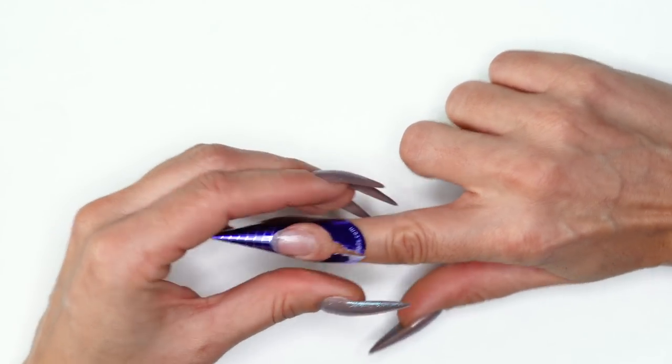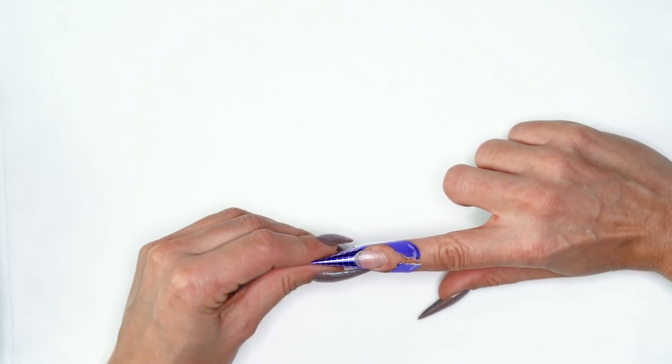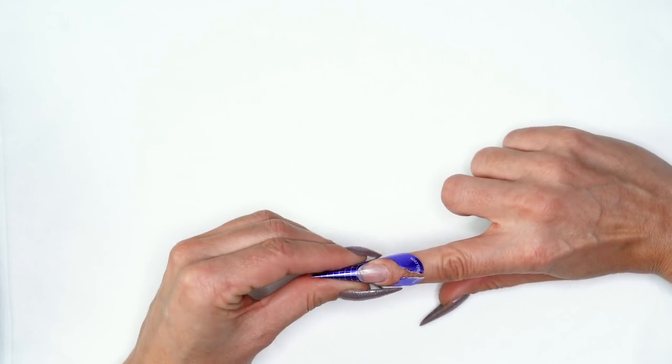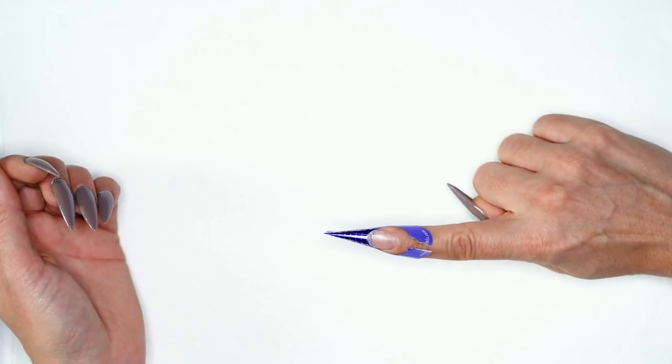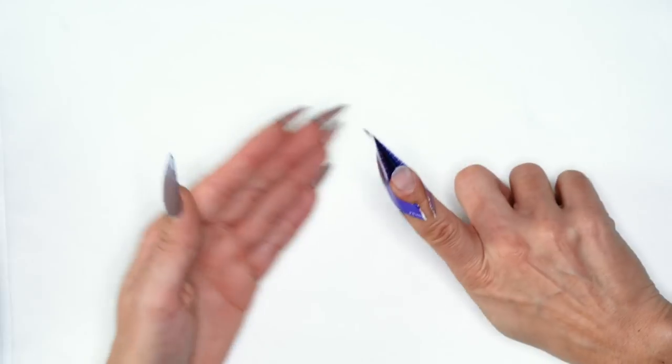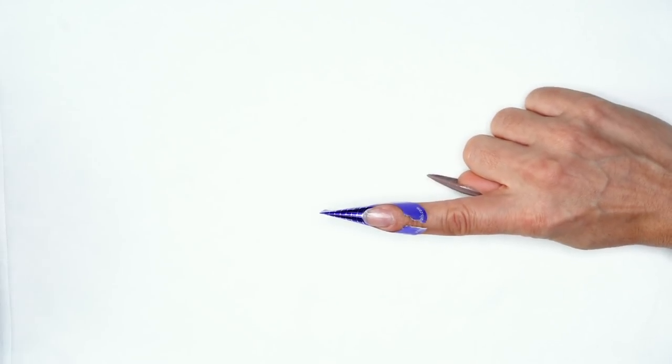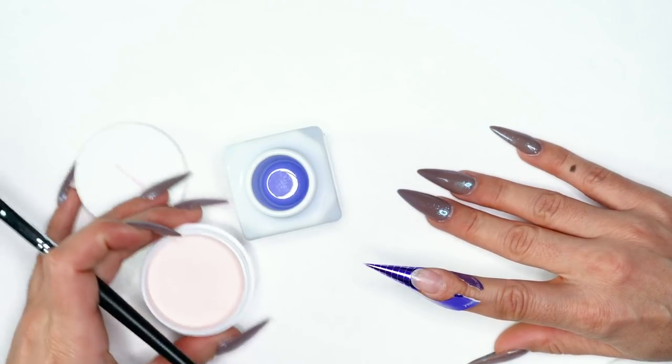Same as any other enhancement on a client or on yourself, you want to make sure that you look at the form and try to make sure that you're at the correct angle so you're going to have a straight enhancement. Looks pretty good, it's nice and flush so we're ready to grab some acrylic. I've got my cover peach acrylic.